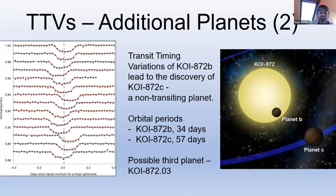The effects of an additional planet, this is an actual example. Transit timings of KOI-872b are shown on the left, which led to the discovery of KOI-872c, a non-transiting planet.